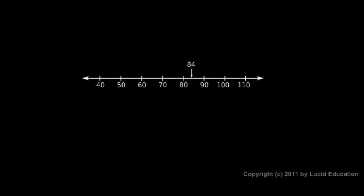84 is approximately equal to 80. This symbol — kind of like an equal sign but with squiggly lines — means approximately equal to. So 84 is approximately equal to 80. That would be correct rounding. We wouldn't say it's approximately equal to 90, because rounding to the nearest ten, it's closer to 80 than it is to 90.